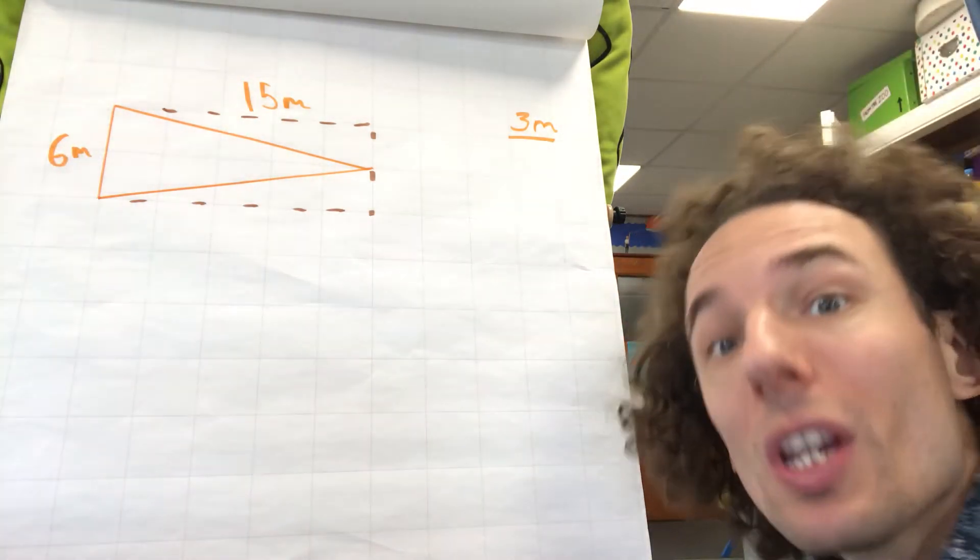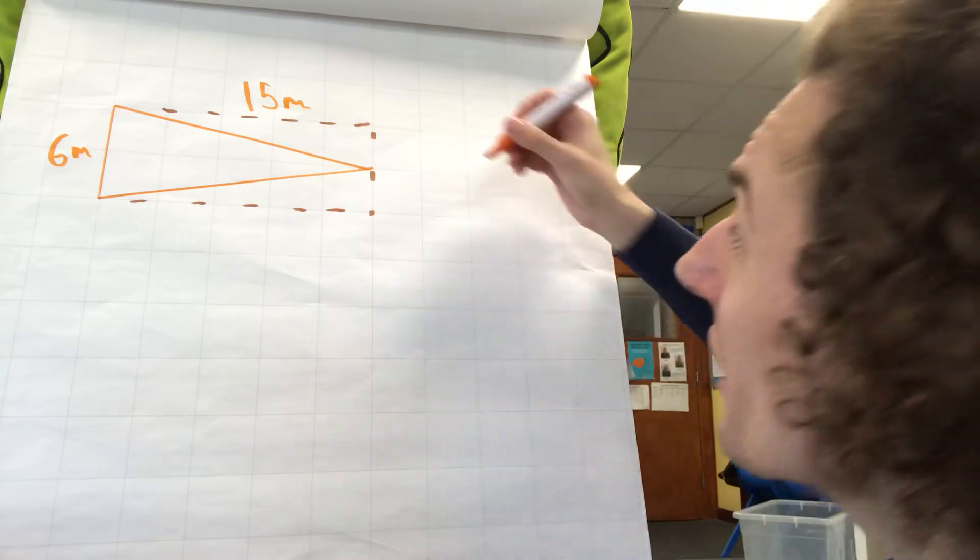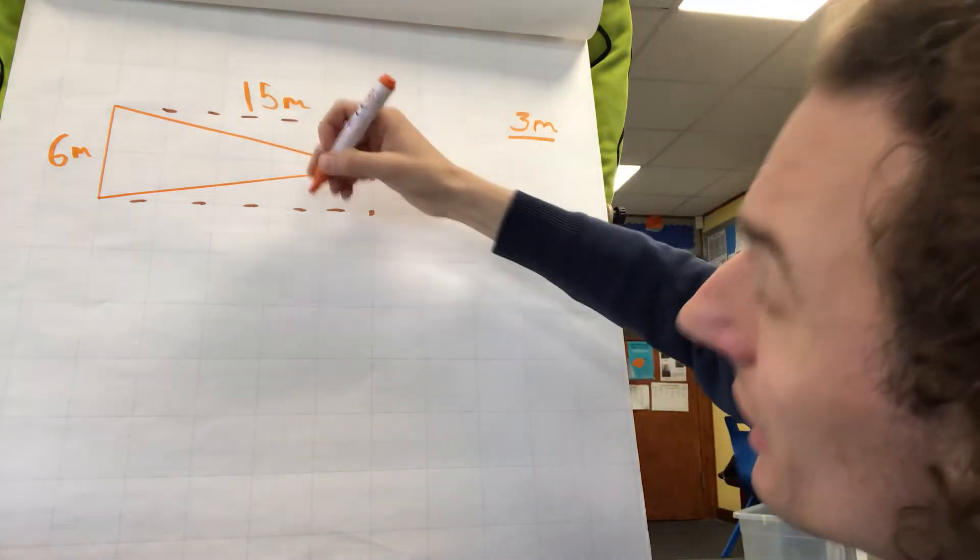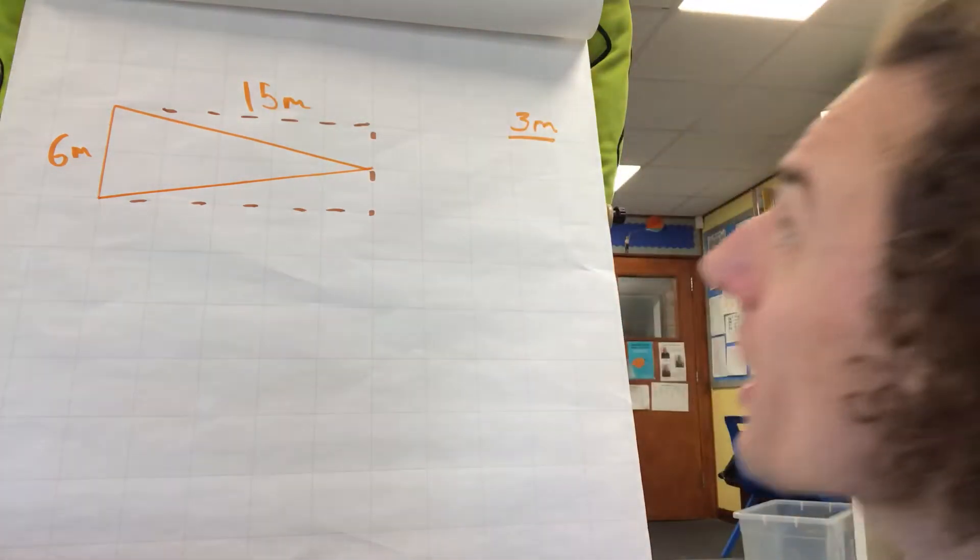6 times 10 is 60. 6 times 5 is 30. So we have got an area of our rectangle of 90 metres,